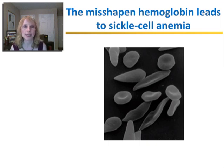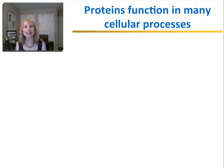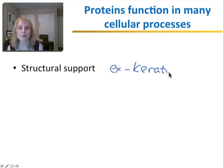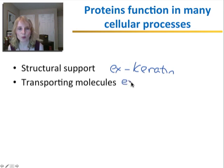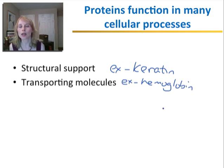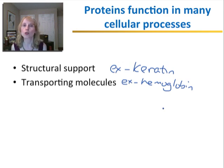So just changing one amino acid can cause something as drastic as death. I hope you have a better appreciation for the structure of proteins now. Let's summarize some of the functions that proteins carry out inside cells. Some proteins function in structure — for example, keratin makes up your skin and nails and gives them their structure. Other proteins function in transport, such as hemoglobin, which transports oxygen throughout your body, and proteins that transport molecules like glucose into your cells so they can use it for energy.